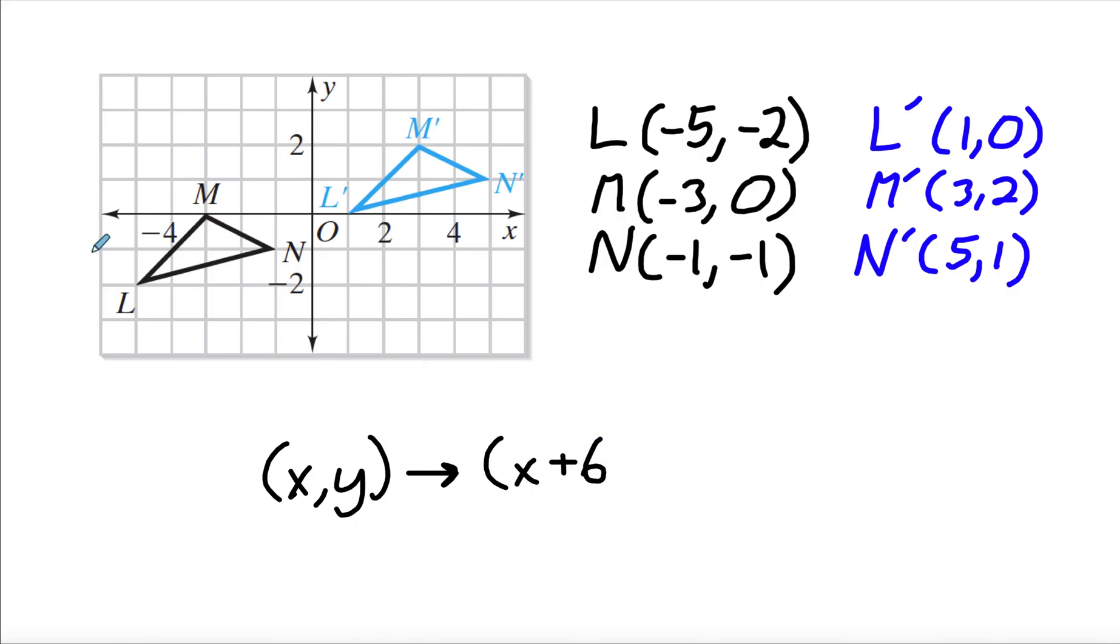Now if it was over here and going left, then we'd put minus six. Now we need to decide what's happening to our Y. Is it going up and down while M's right here, and it's going to there. So it's going up two. So we're going to add two.